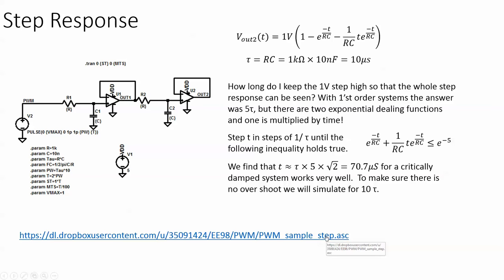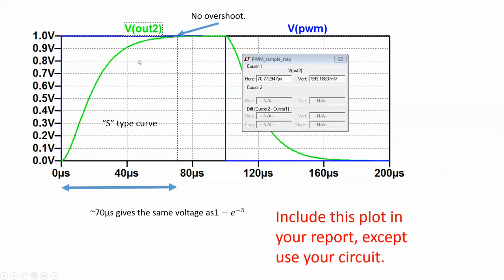You can download this file yourself of course. At 70 microseconds we can see that the vertical response is at 0.993 volts which is very close to what 1e to the minus 5 would be. So that worked out. I can see an S type curve and then even though I've let it go for 10 tau I see no overshoot. So this is a critically damped step response.